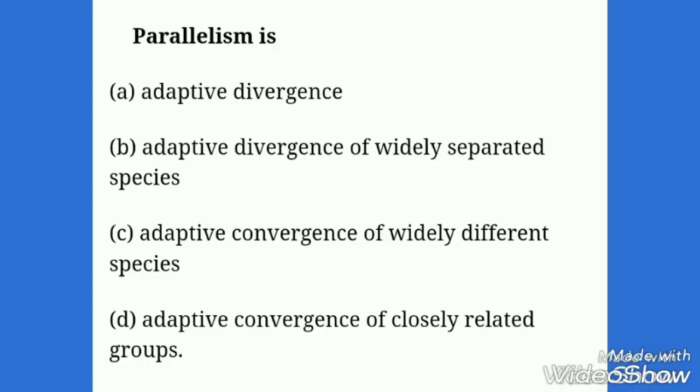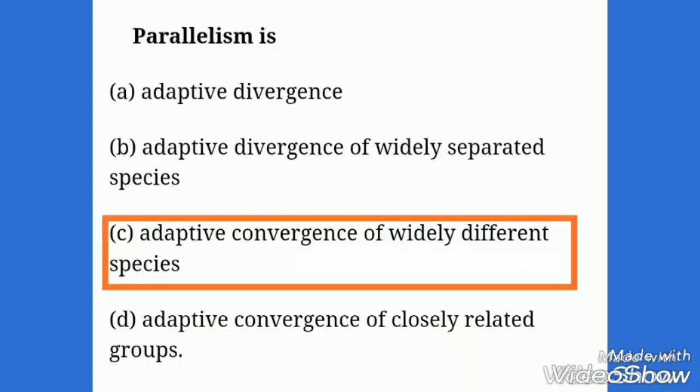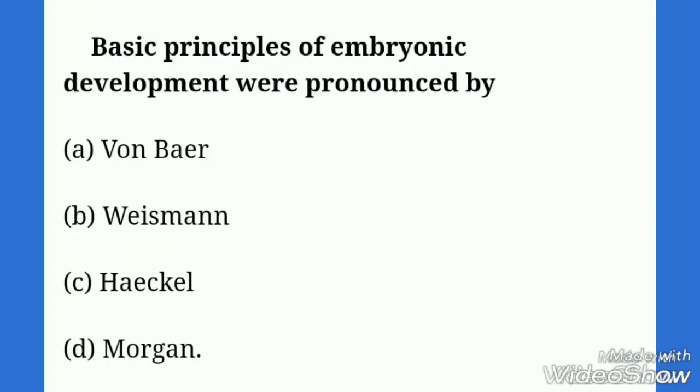Next is parallelism. Parallelism is adaptive divergence of widely separated species, or adaptive divergence of widely separated species, or adaptive convergence of widely different species, or adaptive convergence of closely related groups? Here the correct option is adaptive convergence of widely different species.